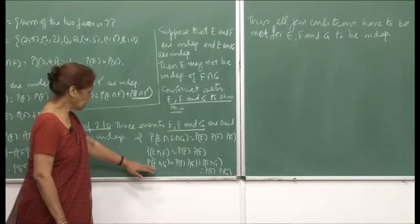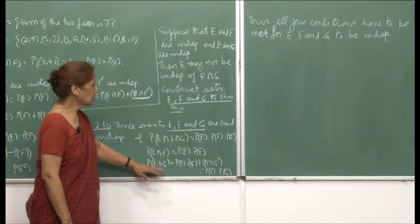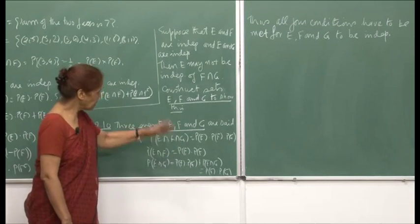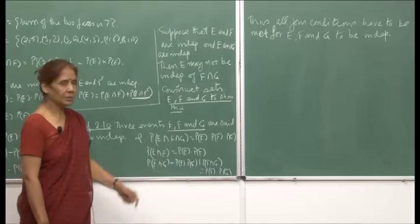Construct subsets E, F, G satisfying only some conditions to show that all four are necessary for mutual independence. We will take up a set of exercises and then come back to constructing examples for these situations.